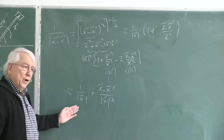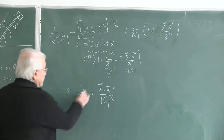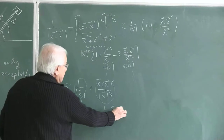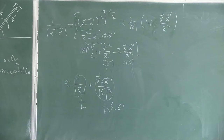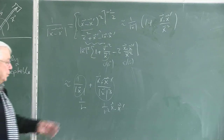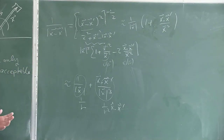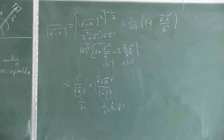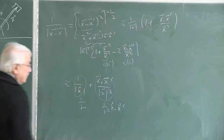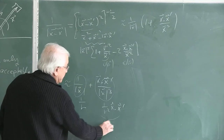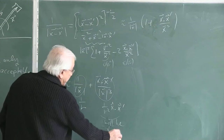The first term is 1/r and the second is 1/r² times x̂·x'. We drop the second term because r is already at the detector — kilometers away — and 1/r² is further suppressed. To the order of approximation we are using, we retain only the first term, 1/r.